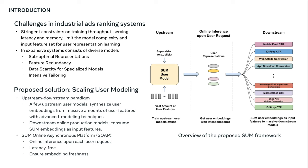In large-scale systems like Meta, which encompasses lots of diverse production models, these limitations become even more pronounced, leading to several interrelated challenges in effective user representation learning, such as suboptimal representations, feature redundancy, data scarcity for specialized models, and intensive tailoring.